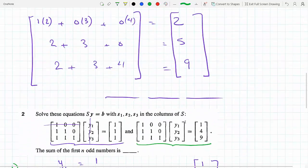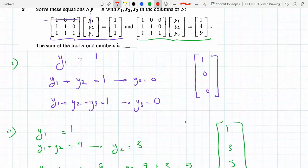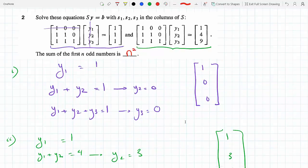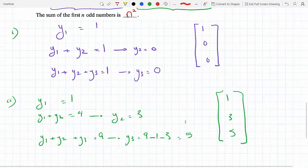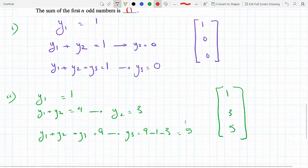That just means that the sum of the first n odd numbers is n squared. That does it.